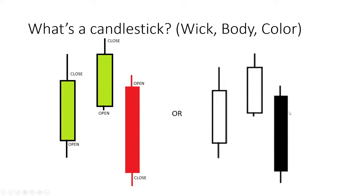As far as colors go, it's all just preference. You've got charts that use green and red, and then you have charts that use black and white. When you're looking at black and white candles, a black candle is the same as a red candle — it just means it closed lower than where it opened. It doesn't mean it had a bad day. A lot of people get confused on that, so I want to clear that up.